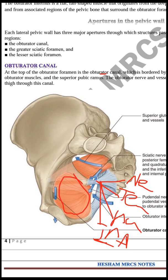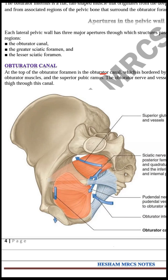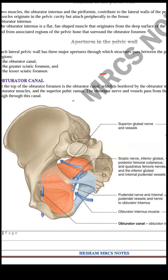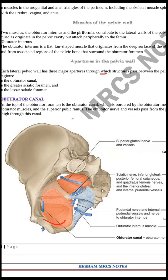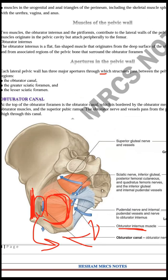The obturator canal is found between the pubis and the tendon of obturator internus within the obturator foramen, which is closed by the obturator internus muscle. The obturator canal transmits the obturator nerve and obturator vessels. In summary, we have the obturator canal, greater sciatic foramen, and lesser sciatic foramen, plus the pelvic floor muscles: levator ani and coccygeus.